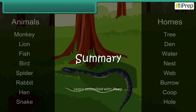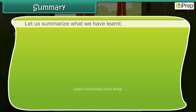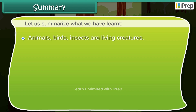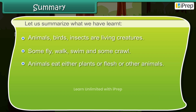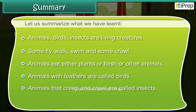Let us summarise what we have learnt. Animals, birds, and insects are living creatures. Some fly, walk, swim, and some crawl. Animals eat either plants or flesh or other animals. Animals with feathers are called birds. Animals that creep and crawl are called insects.